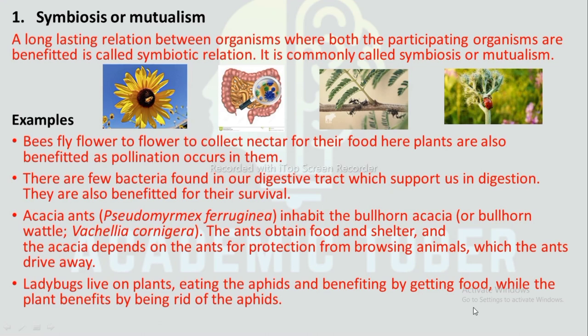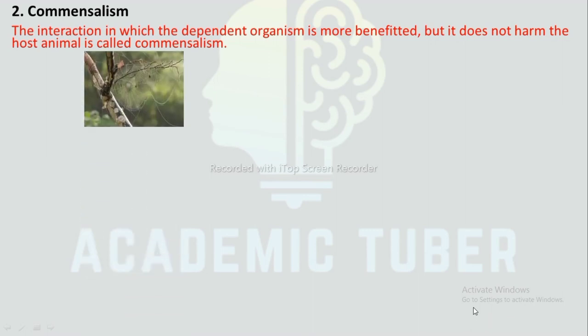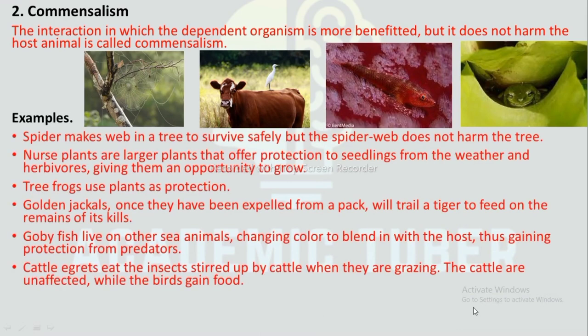Commensalism: The interaction in which the dependent organism is more benefited but does not harm the host is called commensalism. Example: A spider makes a web in a tree to survive safely, but the spider web does not harm the tree.